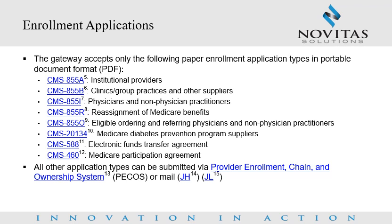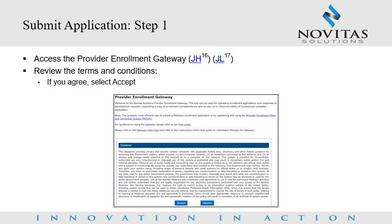All other application types can be submitted via Provider Enrollment Chain & Ownership System or PECOS, or by mail. Submit Application Step 1: We will now walk through how to submit a completed paper enrollment application on the Provider Enrollment Gateway. First, you will access the Provider Enrollment Gateway, review the terms and conditions, and if you agree, select Accept.